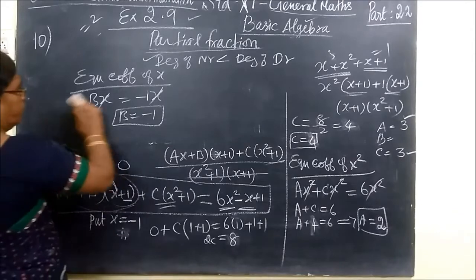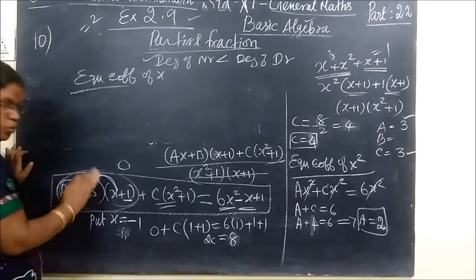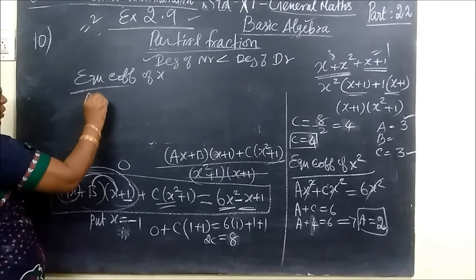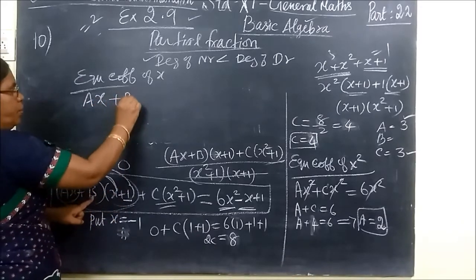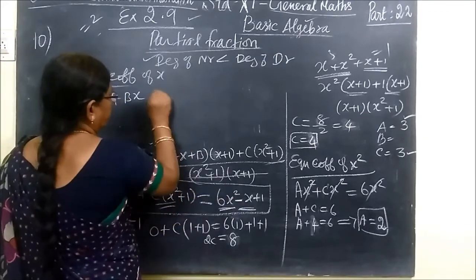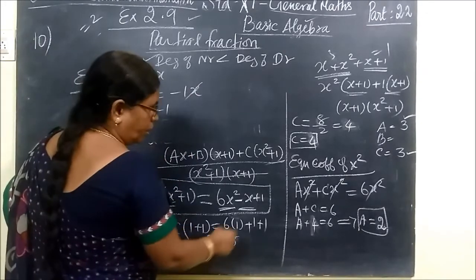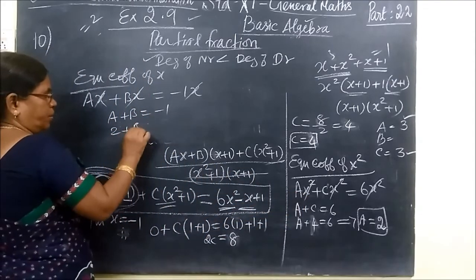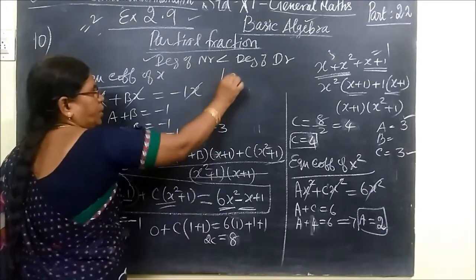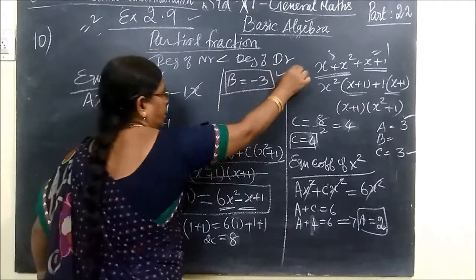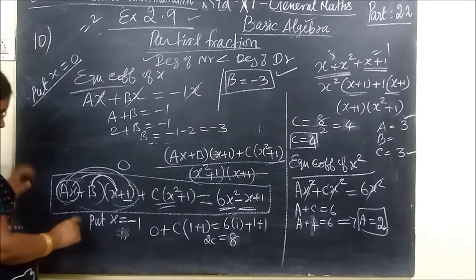So here I got complicated. I think you may understand Ax plus Bx, then Bx in that x, so equal to minus 1x. So A plus B equal to minus 1. B value already in, A value 2. So 2 plus B equal to minus 1, so B equal to minus 1 minus 2 equal to minus 3. So B equal to minus 3. This is correct only.